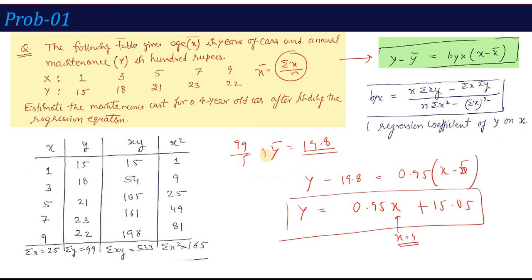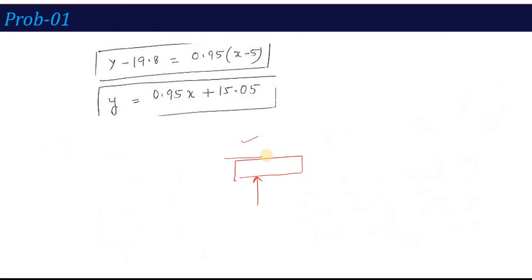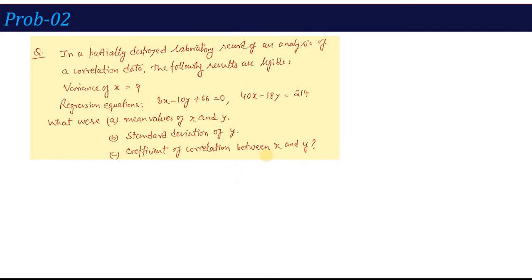Now one last type of question. The second problem on your screen: In a partially destroyed laboratory, record of an analysis of correlation data, the following results are legible. First result: variance of x equals 9, that means sigma x-square equals 9, so sigma x equals 3. Second, what are the regression equations? These are given as 8x minus 10y plus 66 equals 0, and 40x minus 18y equals 214.